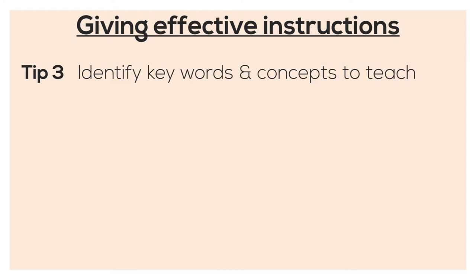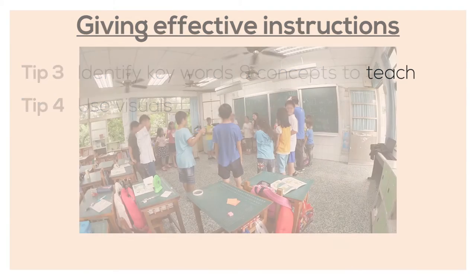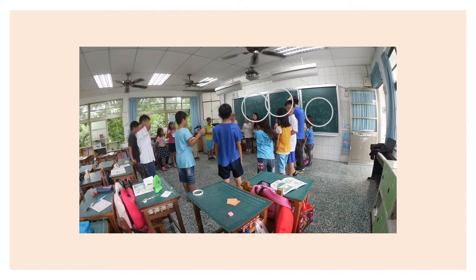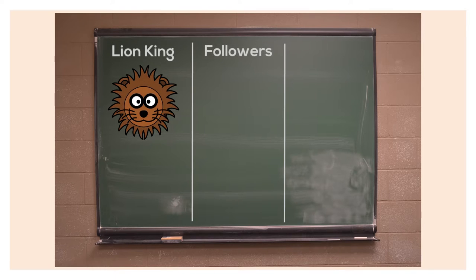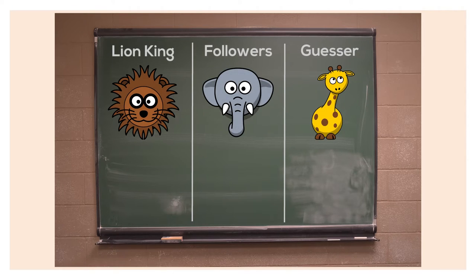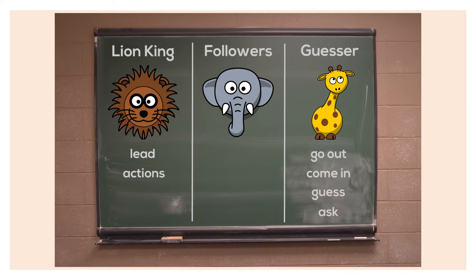When brainstorming how you should teach the words or concepts, consider tip number four: use visuals. Instead of having phrases up on the blackboard, consider a more effective way of using it. For example, divide the blackboard into three sections for the three roles: the Lion King, Followers, and the Guesser. Then write down the keywords and key responsibilities of each role. Under Lion King, write 'lead' and 'actions.' Under Guesser, write 'go out,' 'come in,' 'guess,' 'ask.' Under Followers, write 'look' and 'follow.'